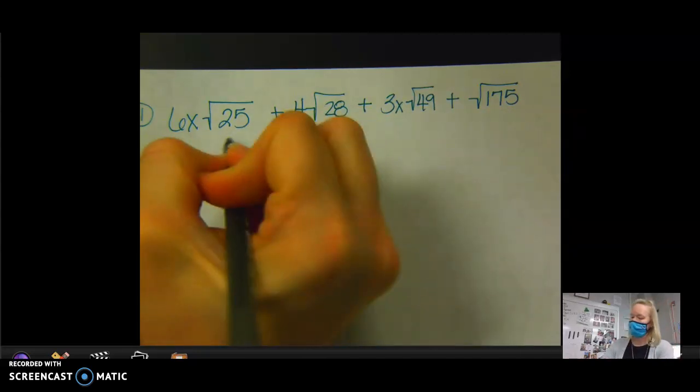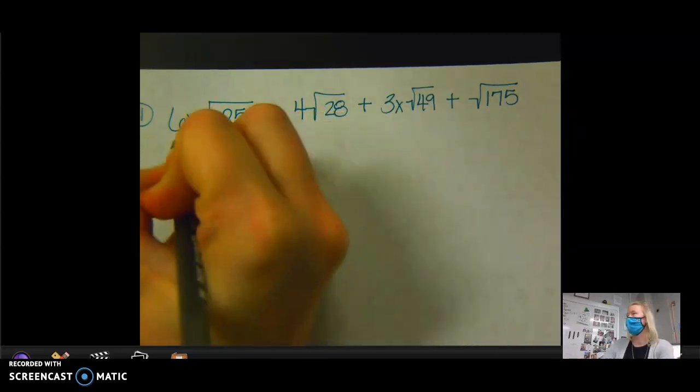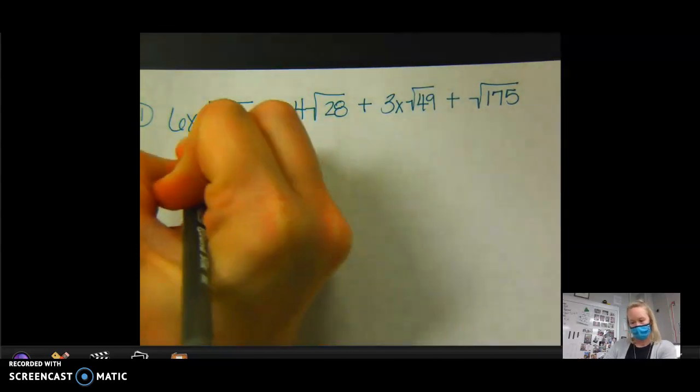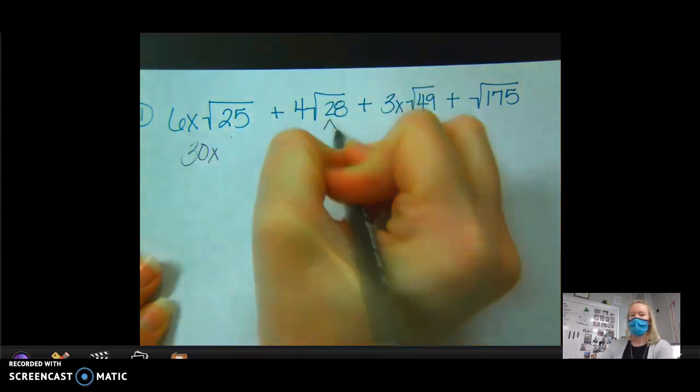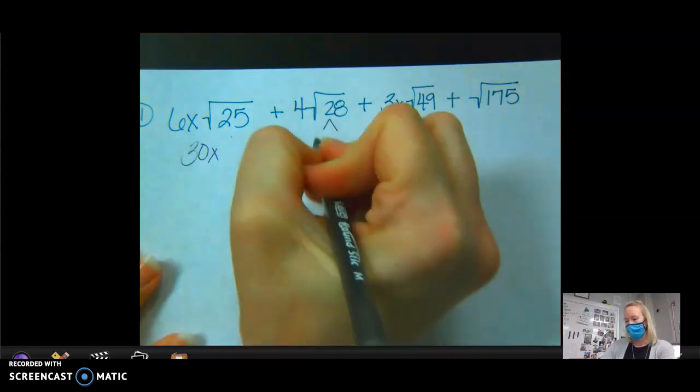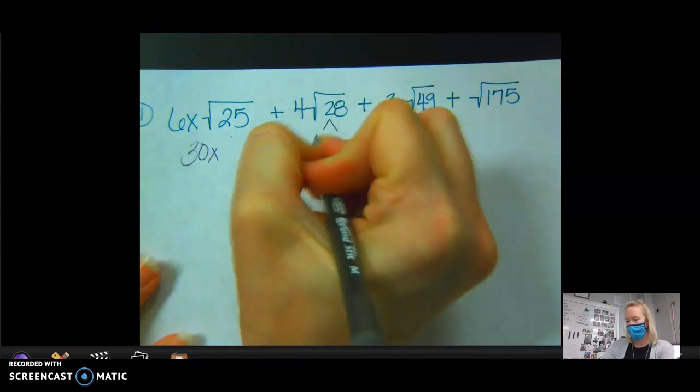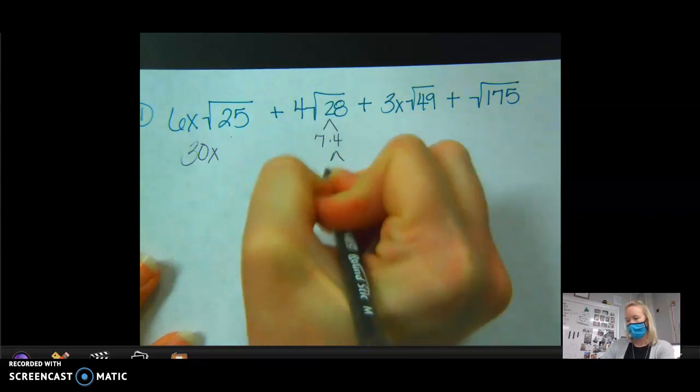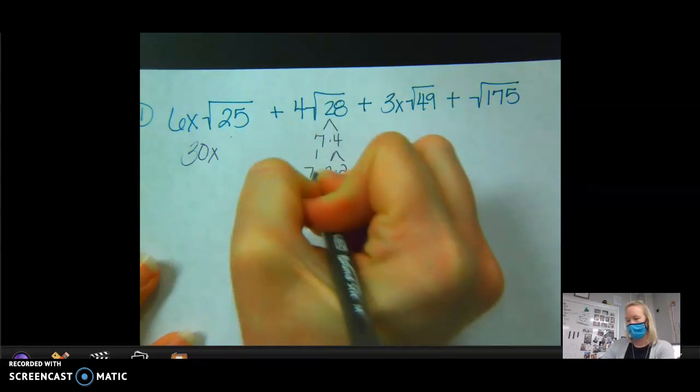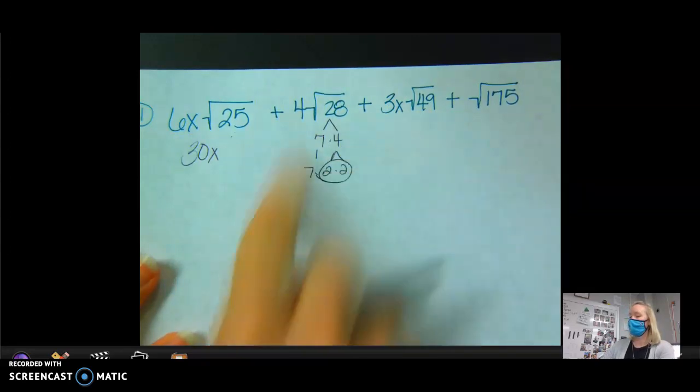This is 5, right? So 6x times 5 is how much? 30x. 28 breaks down into what times what? 7 and 4. And then 4 breaks down into 2 times 2. Bring down my 7. So I have a pair of 2s that will come out. So what would that give me on the outside?